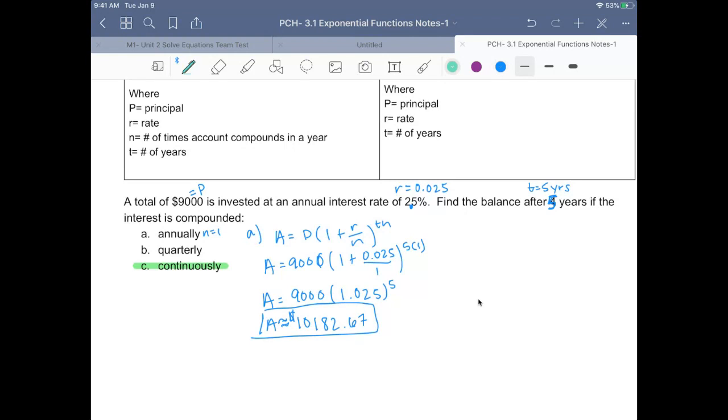All right, this time we're going to do quarterly. So for quarterly, four times a year, we're compounding, every quarter. So we're going to do the amount is equal to 9,000, same principle,